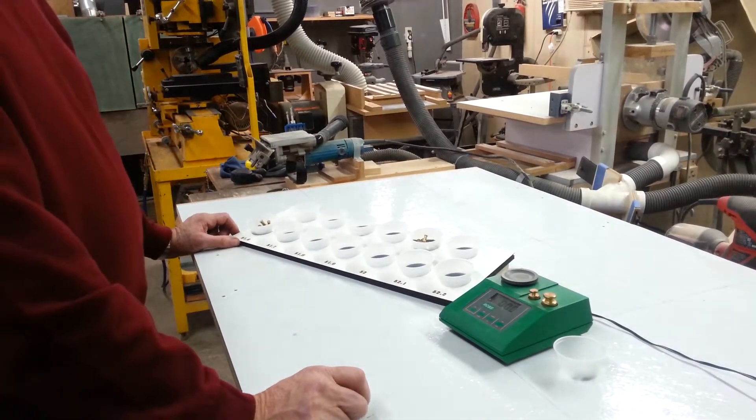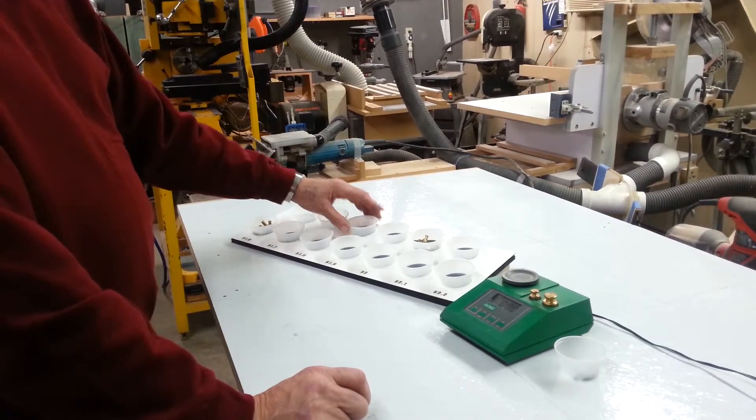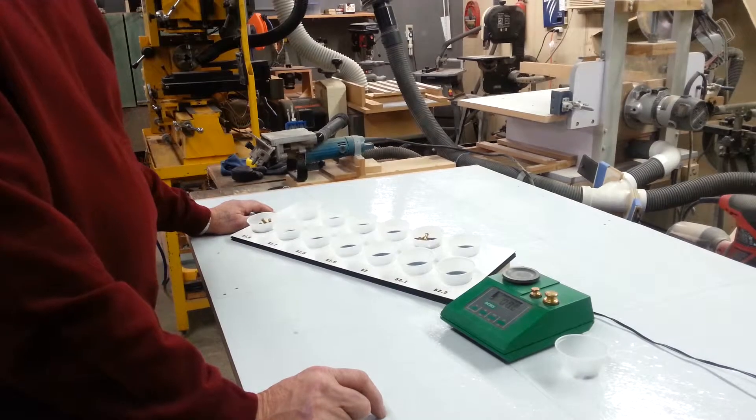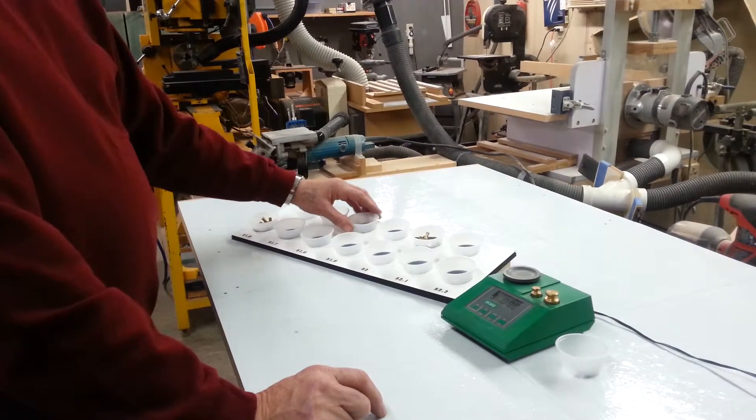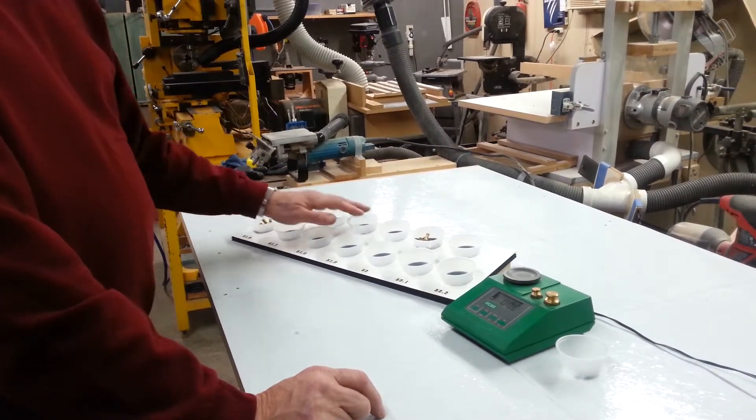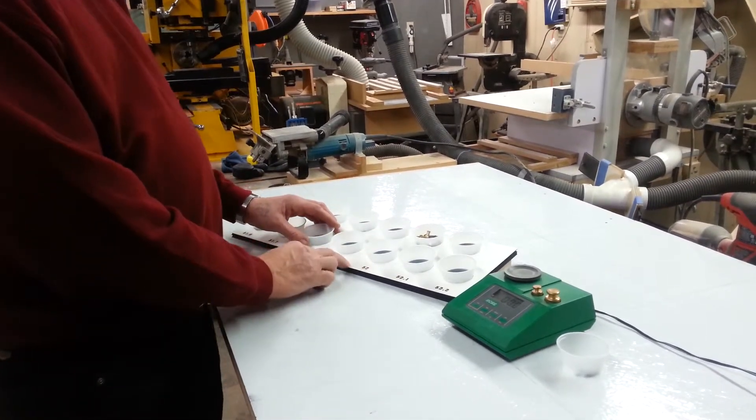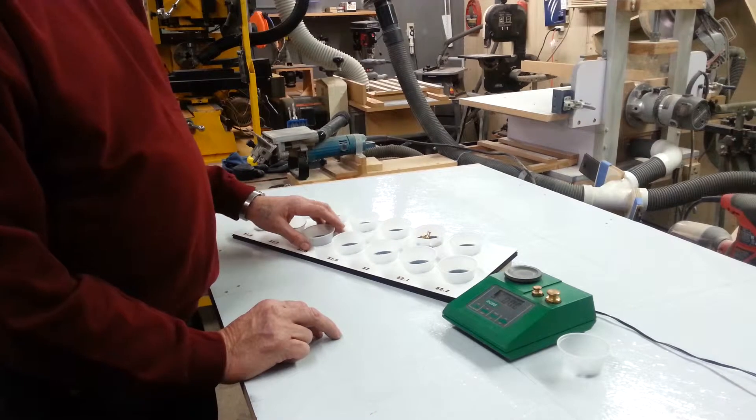Once you get all your bullets separated, each one of these containers will hold roughly 50 shells, so that'll be a box. Then you're going to box them up in groups. You can do them in individual groups or you can go two or three tenth of a grain weight difference in the groups.